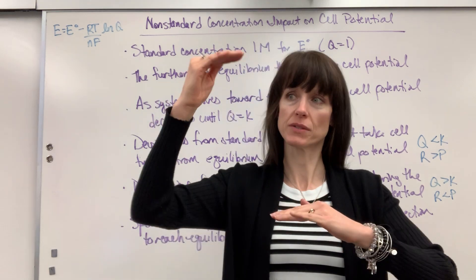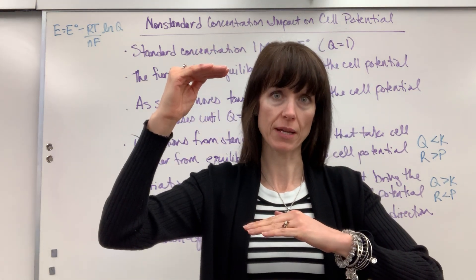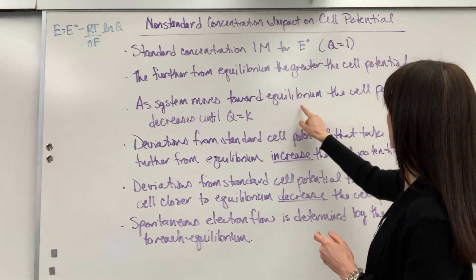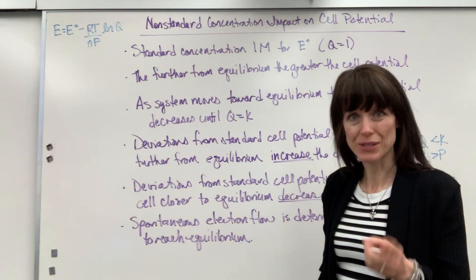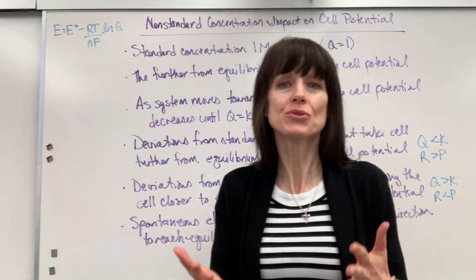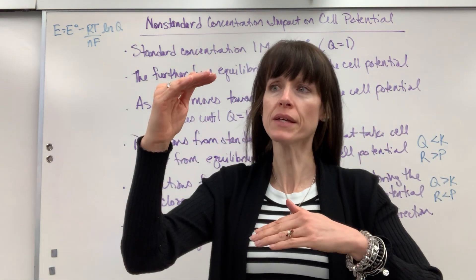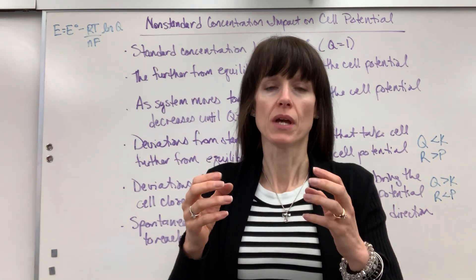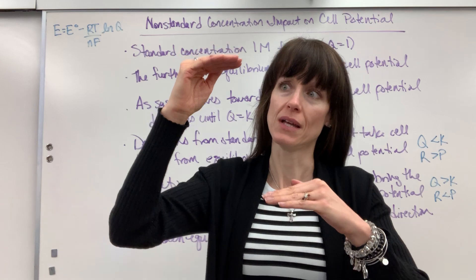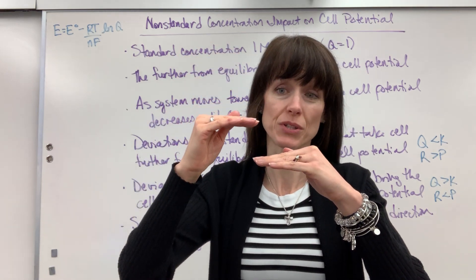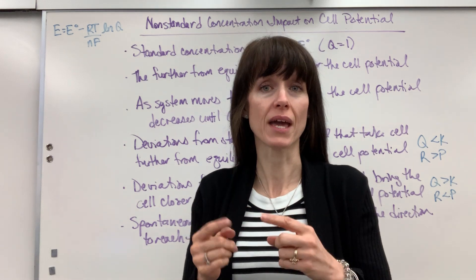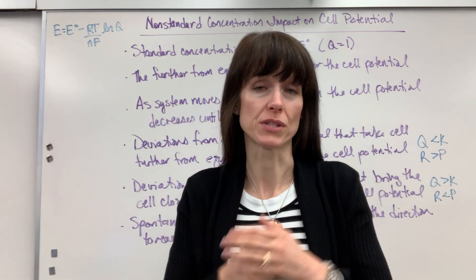When we're at standard conditions, picture the waterfall. As the system moves toward equilibrium, the cell potential decreases until Q equals K. As the concentrations are being consumed, the potential — like the waterfall — has less push. It gets smaller and smaller until Q equals K, and then there's no more voltage to push it.